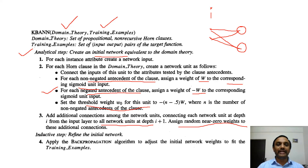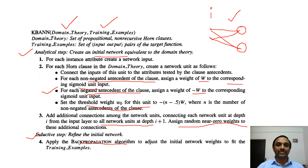After developing this initial network using prior knowledge, we apply the inductive step: applying the original backpropagation algorithm to adjust the weights already assigned, in order to fit the training examples. That is the Knowledge-Based Artificial Neural Network algorithm — first apply the analytical step, then apply the inductive step.